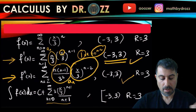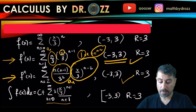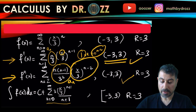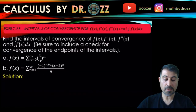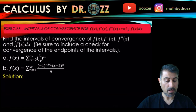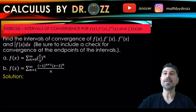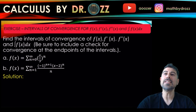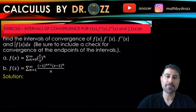So the interval of convergence for the anti-derivative is closed at negative 3 and open at 3: the interval negative 3 to 3, including the left endpoint. That covers the analysis for this problem. For part B, please continue to the next video. Bye.